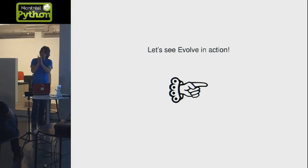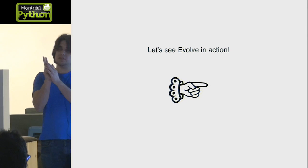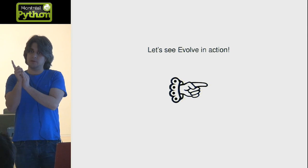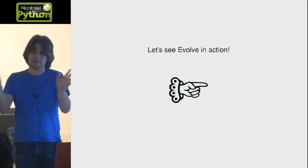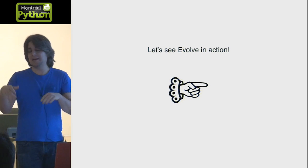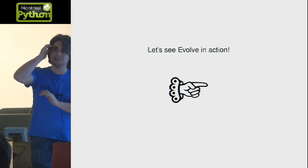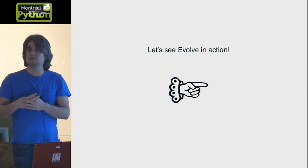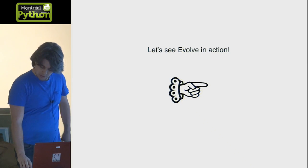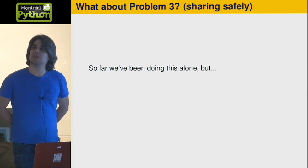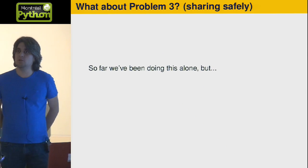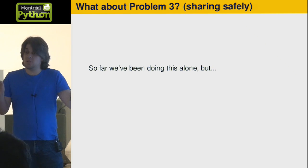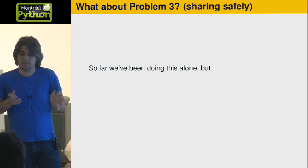I showed you how this handles problems one and two. Problem one is about recovering from an upstream rebase — that's just hg evolve, it's magic. Actually there's a lot of logic behind it, but for now it's magic. And there's problem number two about immutable commits. But what about problem number three about sharing safely? This has all been local so far, but once you start pushing and pulling it gets more messy. And what was going on with those revision numbers skipping around?